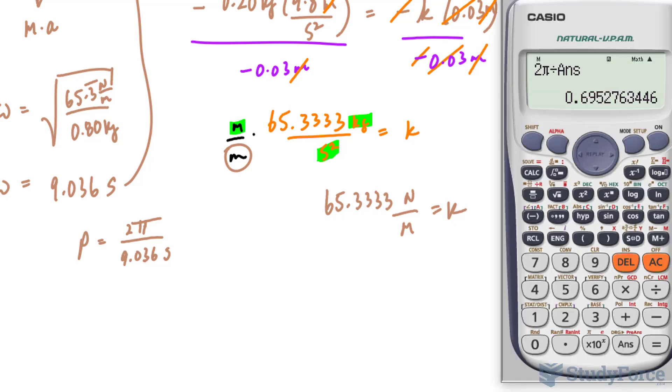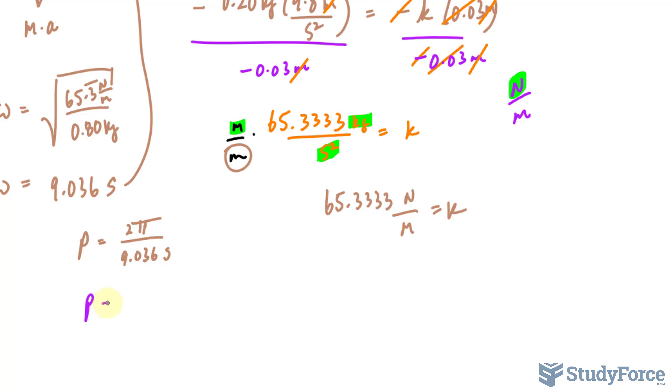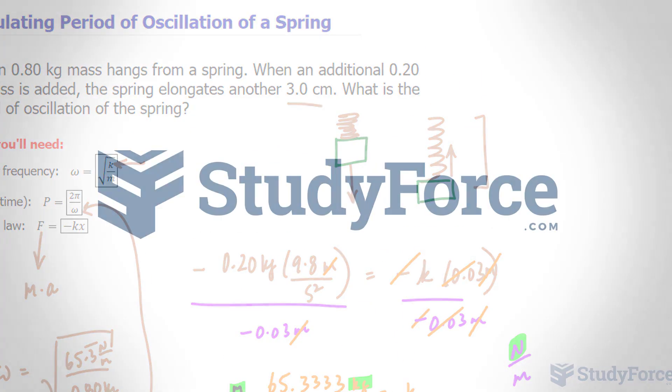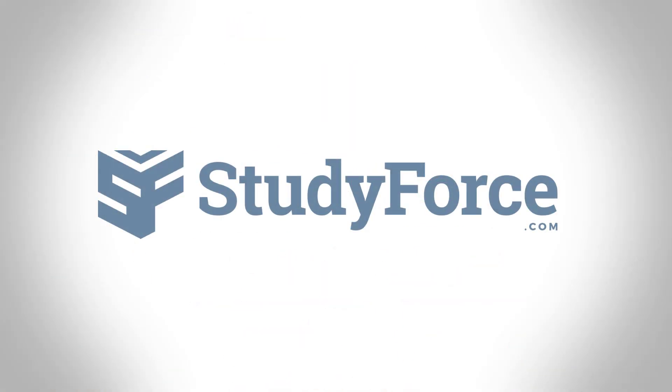And rounded to two significant figures, we'll just write down 0.70, period is equal to 0.70 per second, per one second. And so there you have it. That is how to calculate the period of oscillation of a spring.